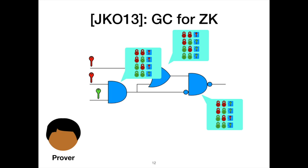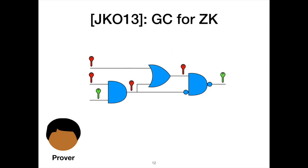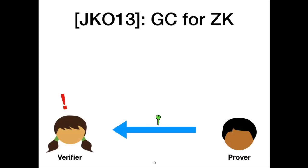Once Bob the prover gets the circuit encryption, he gets input keys to the circuit via oblivious transfer. Now he has his input encoded in the garbled circuit construction and he steps through this circuit gate by gate, decrypting and eventually producing a green output key. To turn this garbled circuit into a zero-knowledge proof, Bob sends this green key to Alice. The properties of the garbled circuit ensure that the only way Bob can get one of these green keys is to have a satisfying input to the circuit.